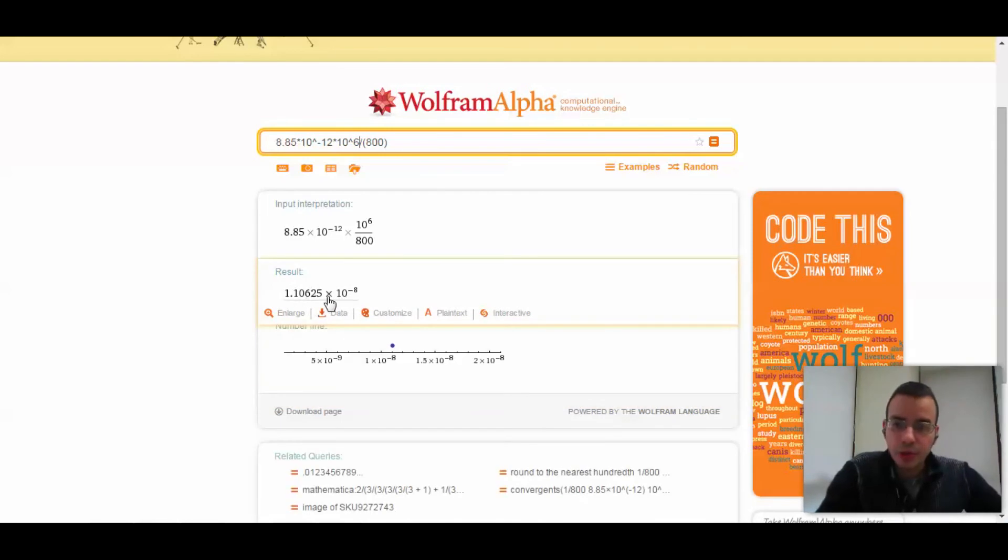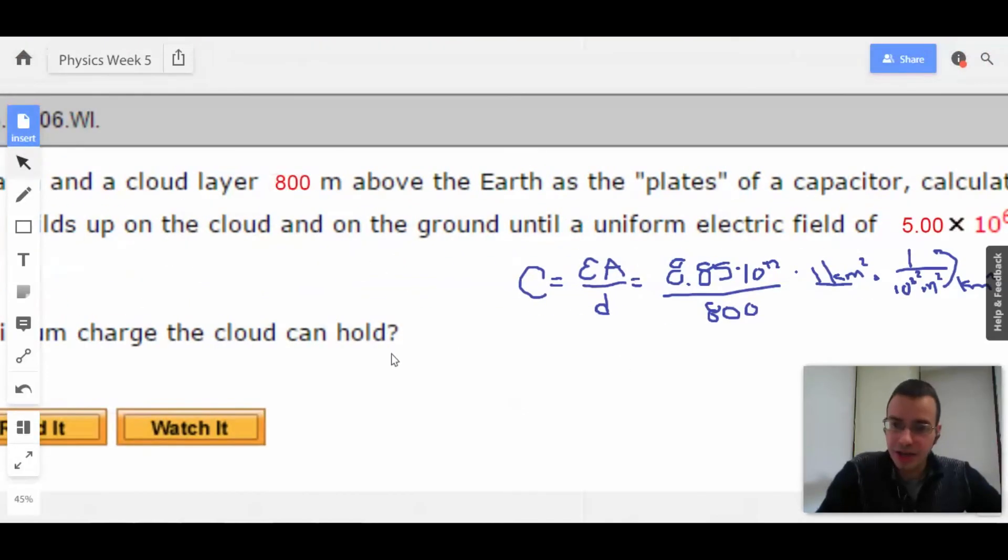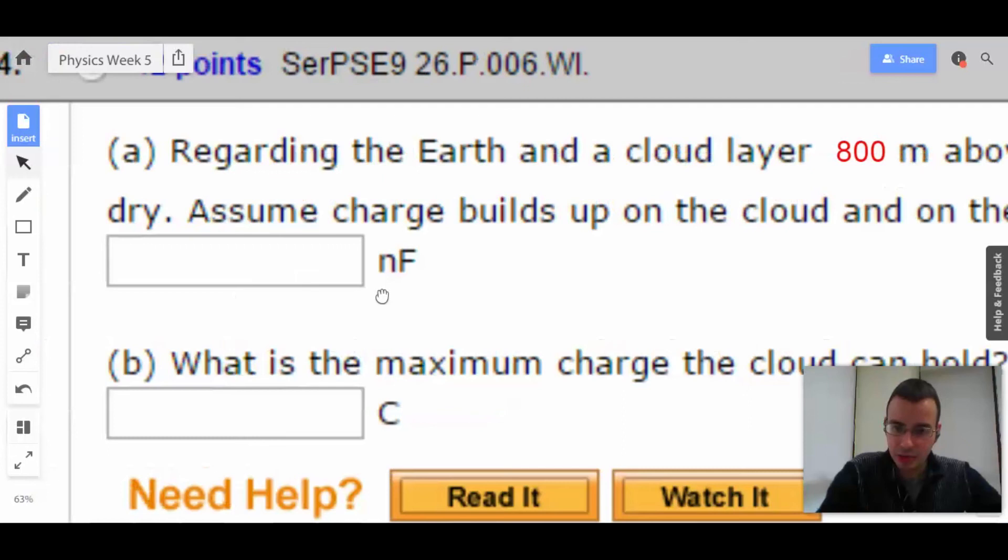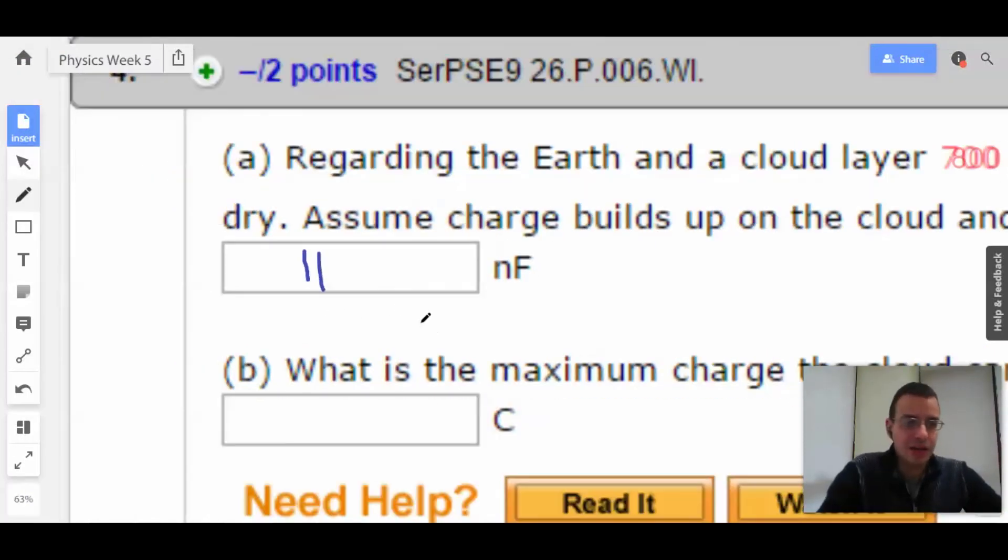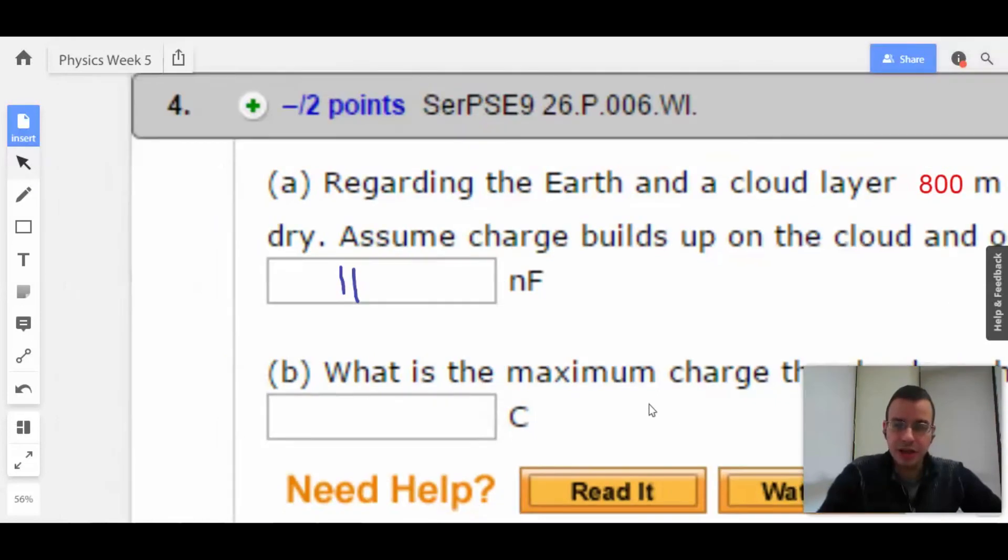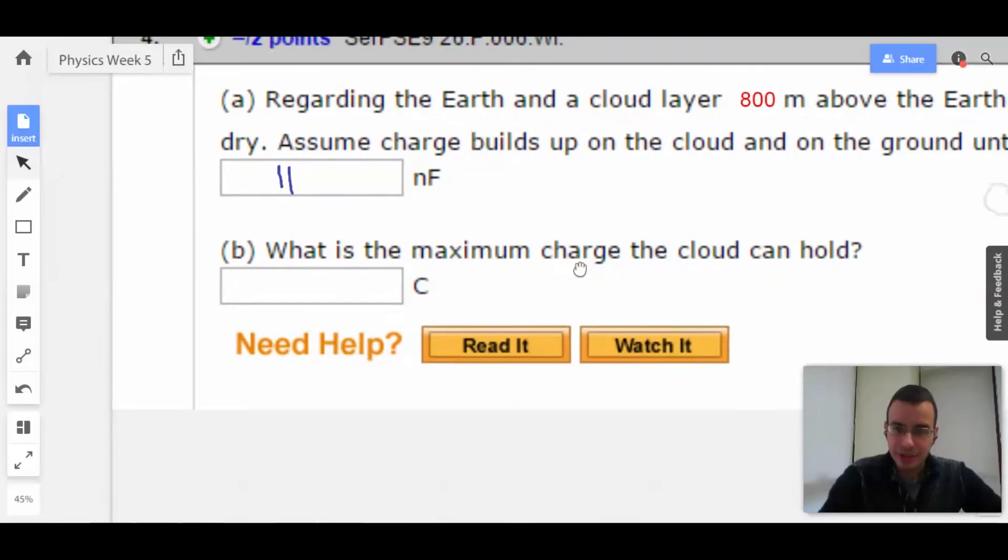So we got 1.1 times 10 to the negative 8th, which is going to be 11 times 10 to the negative 9th. You're like, what? Why do you need 10 to the negative 9th? Because I think they asked for nanos. So I'm going to write in 11 nanofarads. You should take it out to a couple more decimal places so the web smartassign, whatever, accepts it.